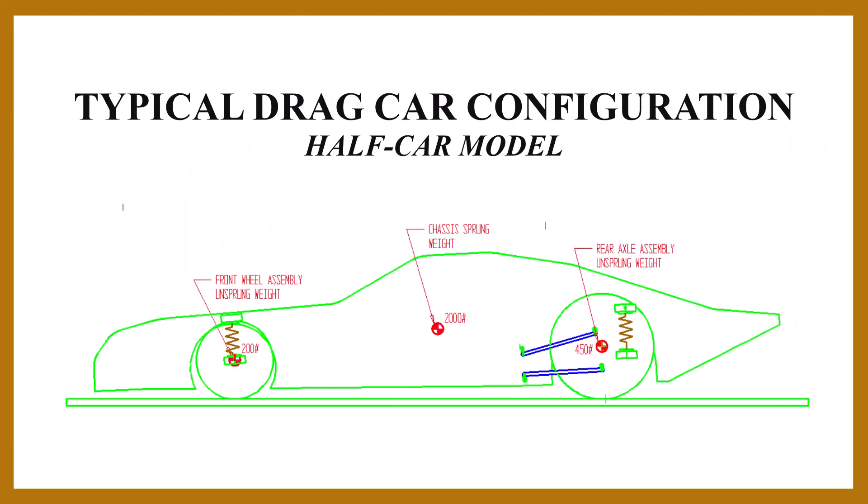Here's the typical configuration consisting of the two unsprung masses, the main body sprung mass, and two springs and shocks. Sometimes the tires are represented by their own spring and damper. We'll keep things simple to start out. This is a two-dimensional understanding, or sometimes referred to as a half-car model.